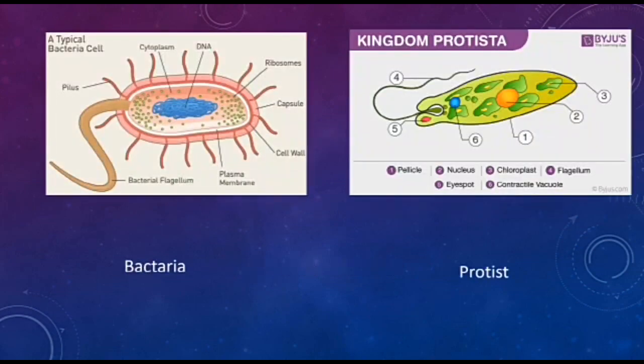As you can see in the diagram of bacteria, the bacterial cell does not consist of any membrane-bound nucleus. While in the diagram of protists, you can see a membrane-bound nucleus at point number 2. This is the main difference between a bacteria and a protist.